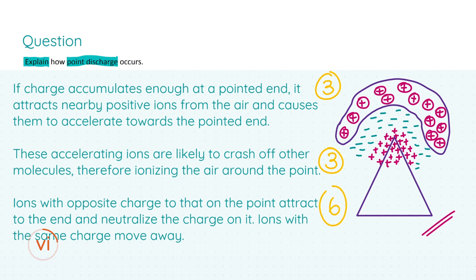For a total of six marks, you need to state that ions with opposite charge to that on the point attract to the end and neutralize the charge on it. Ions with the same charge move away. This can be seen in the diagram—the positive charge accumulated at the point is here, but up here we have what's called electric wind, caused by the ions with the same charge as that on the pointed end, and they move away in a rush because they are repelled by the pointed end.